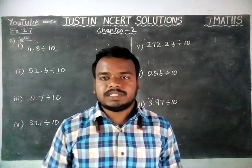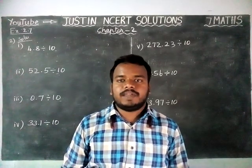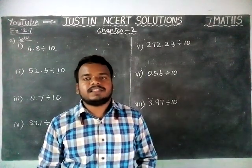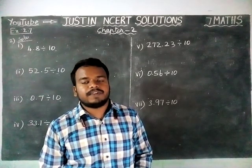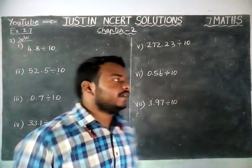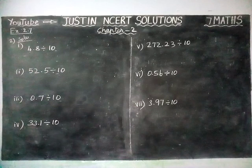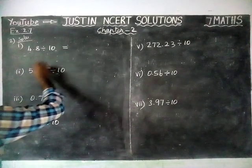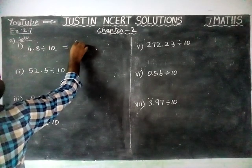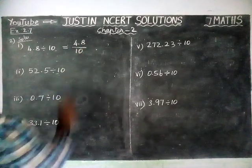Hi students, welcome to Justine's NCRT Solutions. In this video, we are going to see 7th standard maths chapter 2 exercise 2.7, second question. We are going to divide a decimal number by 10. The first sum is 4.8 divided by 10.